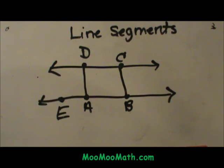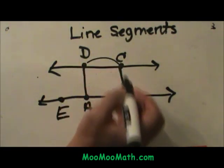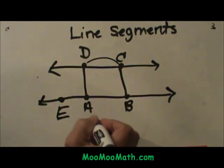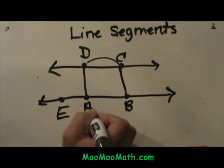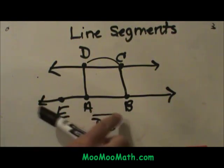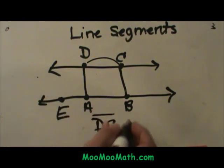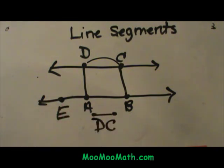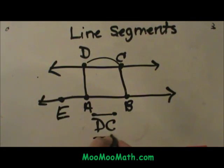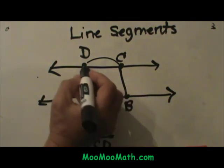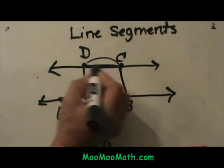Now the only trick is how do you actually communicate that when you write it down? To name this segment from D to C, one way would be to write DC with a segment bar over it. Notice I didn't put arrows on that — you can even put little dots on the ends to show that it is a segment and does not continue. So you can name it DC or CD; both represent the segment from here to here.